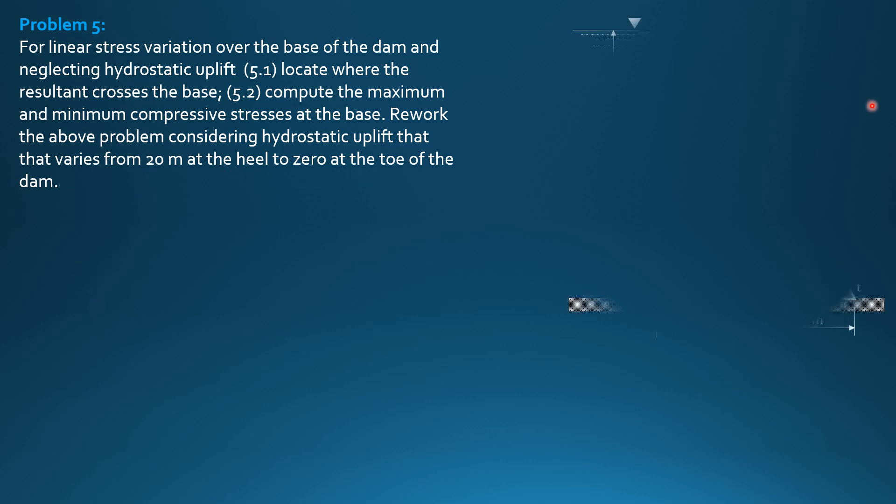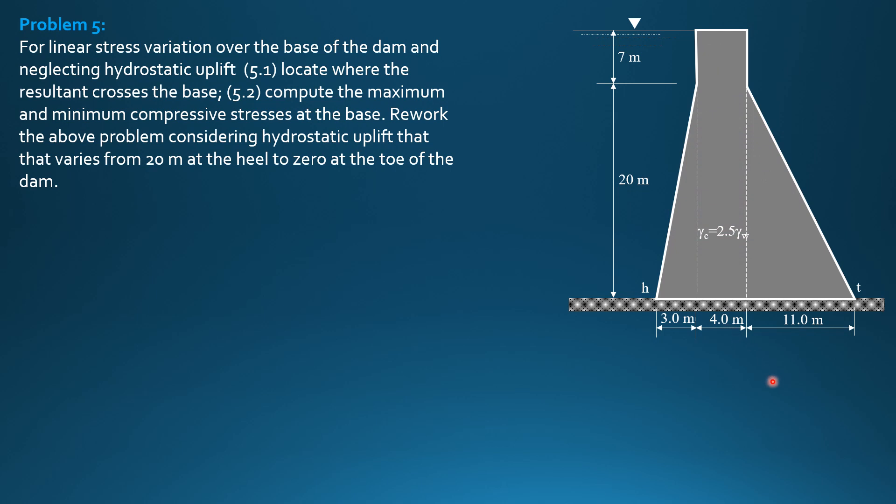This is the figure cross-section of the dam. We consider 1 meter step into the board. So B is 3 plus 4 plus 11, so it is 18 meters. That's the location of FH.